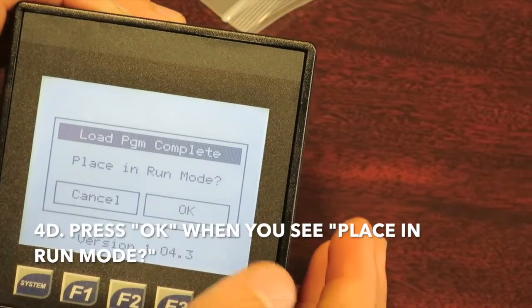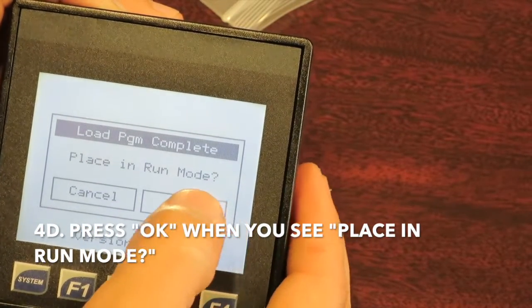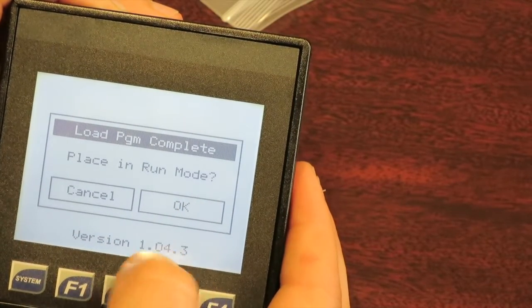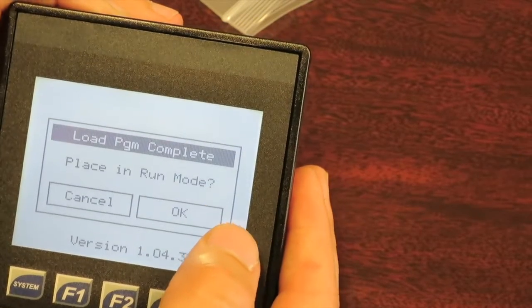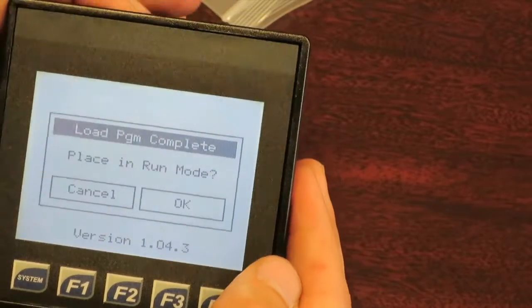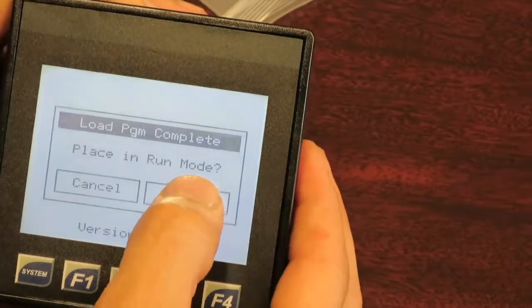After it loads all the parts of the program, a screen will say place in run mode question mark and you'll press OK. You'll also see the version, so you can check and make sure that you've installed the correct version. Always before you do PLC maintenance, it's good to record your previous version and just keep that in your maintenance log. So we're going to press OK.